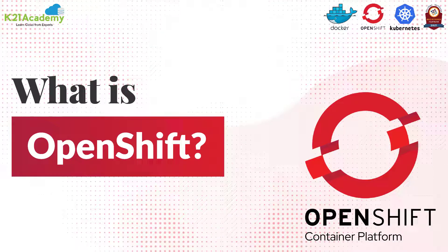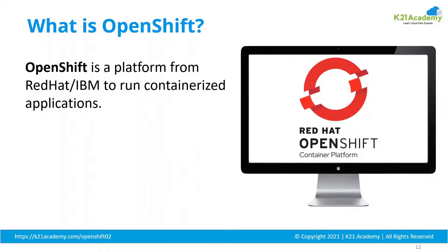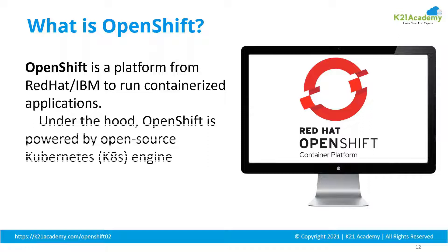So what is OpenShift? In simple terms, OpenShift is a platform from Red Hat, which was acquired by IBM because of the popularity Red Hat was gaining because of OpenShift and their other cloud native applications. It's a platform to run containerized applications — the applications that were earlier built for virtual machines or bare metal machines are now running in containers.